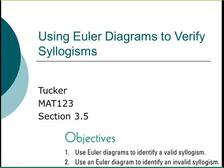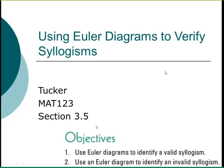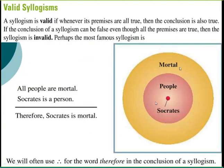In this lesson we're going to take a look at section 3.5, using Euler diagrams to verify syllogisms. We're going to be looking at and drawing pictures like this one. A syllogism is valid whenever its premises are all true and the conclusion is also true.